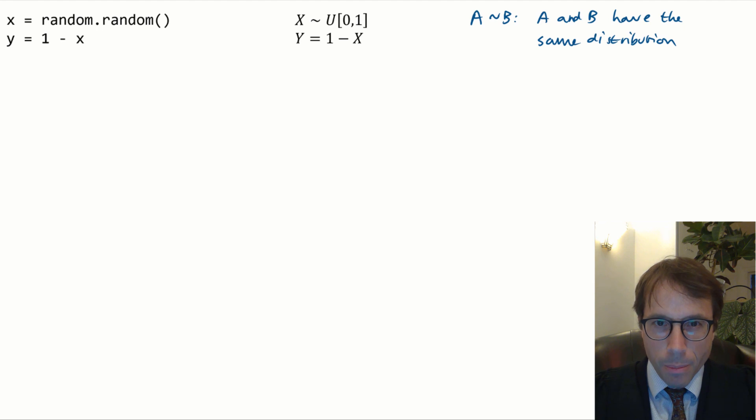It's not a statement about how a is generated. So, for example, in this piece of code, it's perfectly legitimate to write y twiddles uniform of 0,1. This is the statement that y has the uniform distribution. y is equally likely to take any value in the range 0,1.